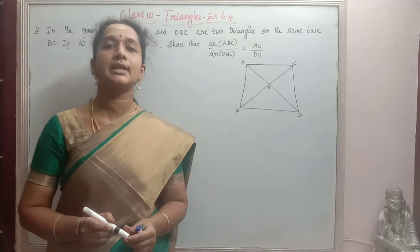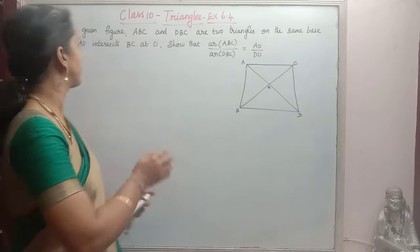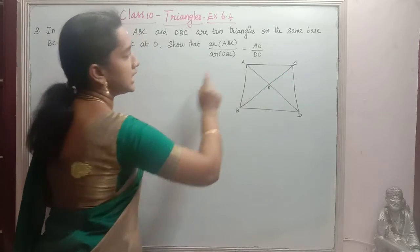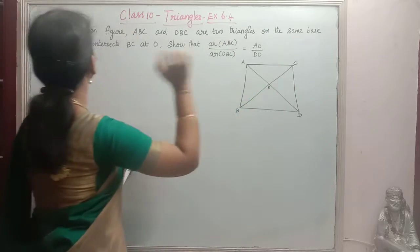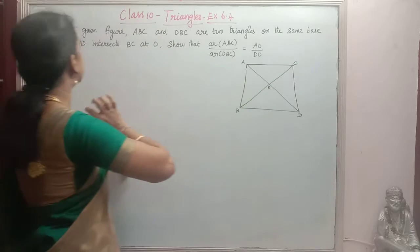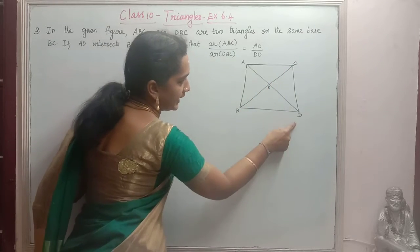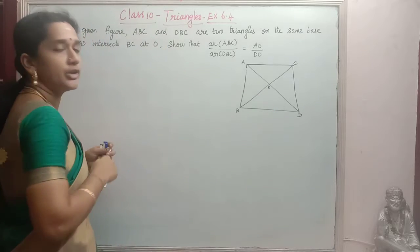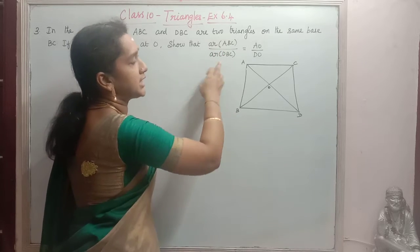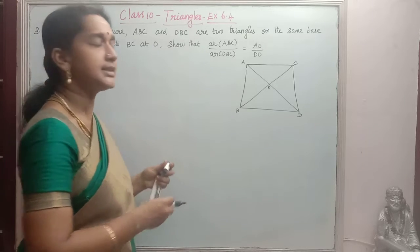Good morning students. In this class I will be doing class 10 CBC syllabus 6th chapter triangles, exercise 6.4. The third sum states: in the given figure, ABC and DBC are two triangles on the same base BC. If AD intersects BC at O, show that the ratio of area of triangle ABC to area of triangle DBC is equal to AO by DO.